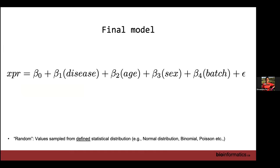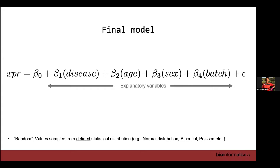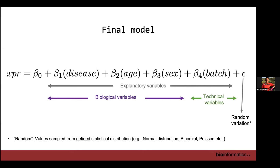A small note in stats: that residual term — they always say it's drawn from a random distribution. When stats people say 'random,' they don't use it the way we do in common English — they don't mean arbitrary. It means it is sampled from a distribution that follows a particular distribution. So these are explanatory variables: part are biological, part are technical, and there's random variation.